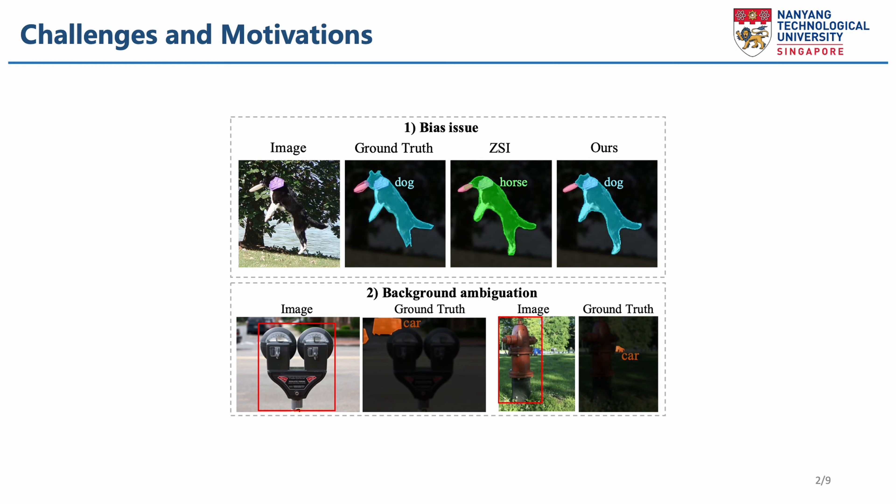We focus on two major challenges in zero-shot instance segmentation: bias issue and background ambiguation. Since the model is trained on the data of seen categories, it tends to classify all objects into seen categories. Novel objects like dog are labeled as seen classes like horse in the figure. The background ambiguation issue is specific to zero-shot instance segmentation. In training, objects that do not belong to any training categories are considered background — for example, parking meter and hydrant in the figure — so the model is likely to identify novel objects as background, which affects final performance a lot.